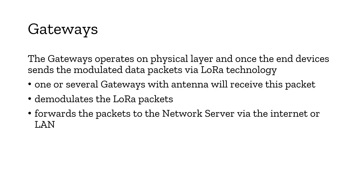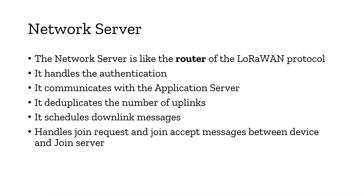Gateways operate on the physical layer. End devices have a LoRa module inside that modulates the signal and sends it to nearby gateways. One or several gateways with antennas will receive the packet, demodulate it, and forward it to the network server. You can deploy your network server either on the internet or on a local area network.